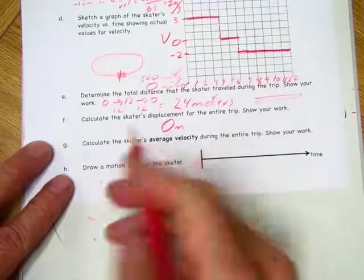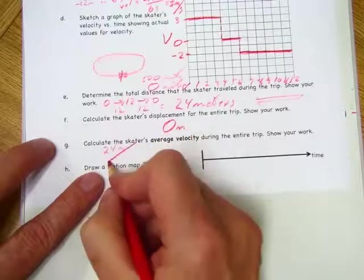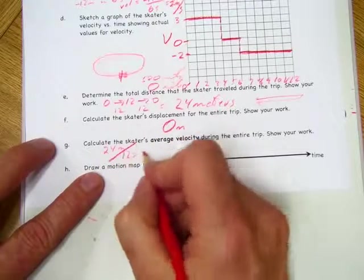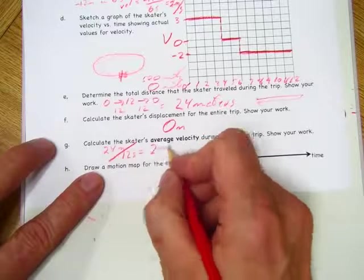Skater's average velocity, well, we know that it was 24 meters total in 12 seconds, so that's 24 divided by 12 is 2 meters per second.